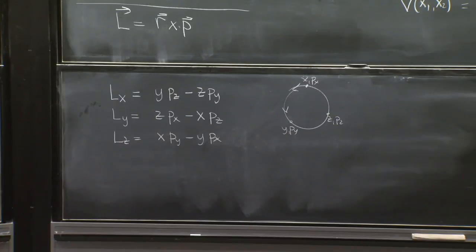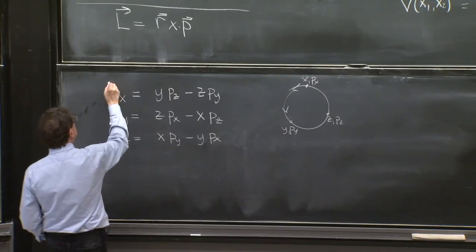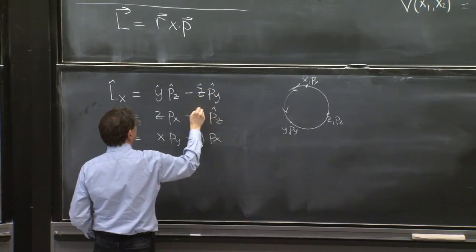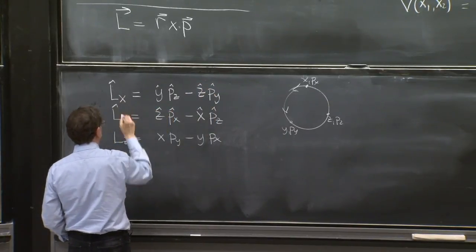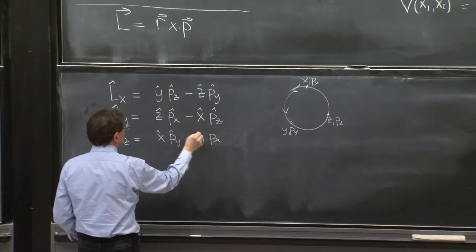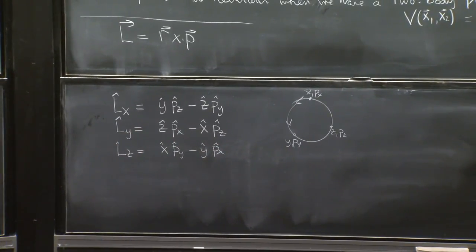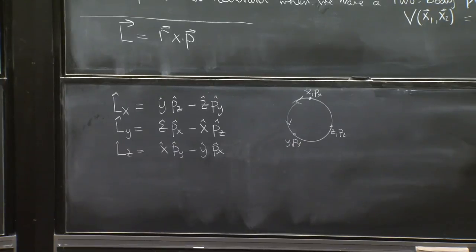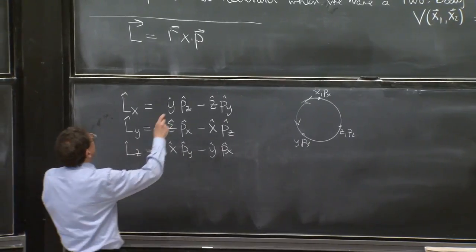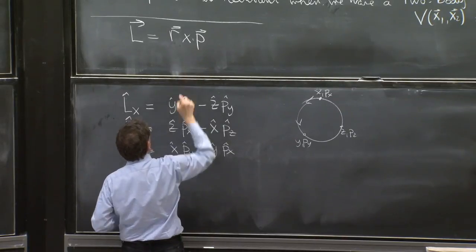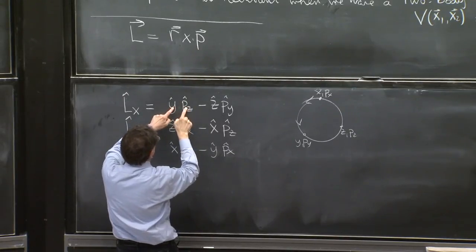And these things, I'll think of them as operators. Let's put hats to everything. The first thing I can wonder, with a little bit of trepidation, is maybe I got the ordering wrong. Should I have written here, classically, you put r cross p, and then the order of these two terms doesn't matter.